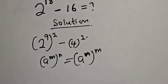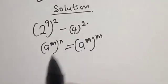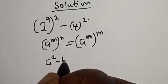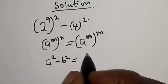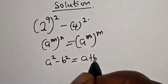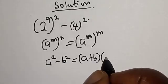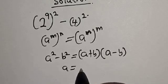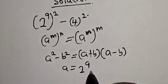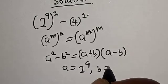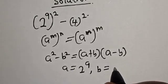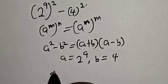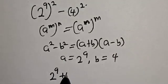This is difference of two squares. Remember the rule: a squared minus b squared equals (a + b) multiplied by (a - b). Here, a equals 2^9 and b equals 4. Let's substitute.